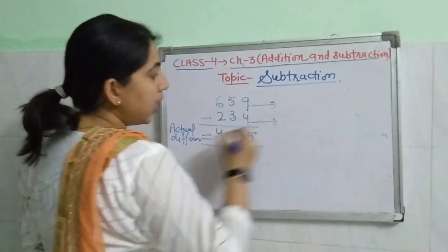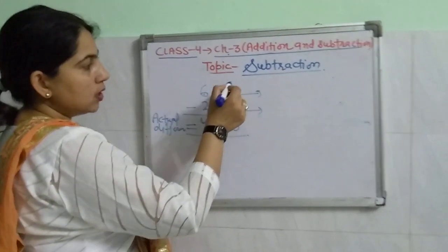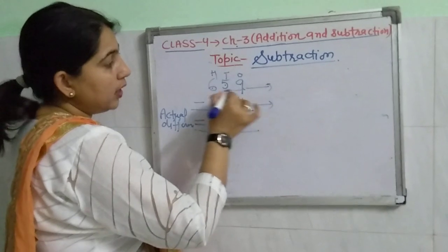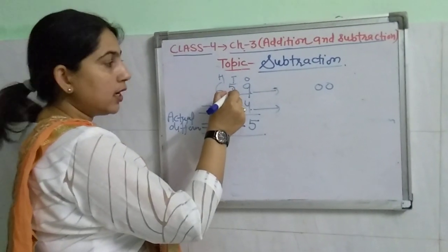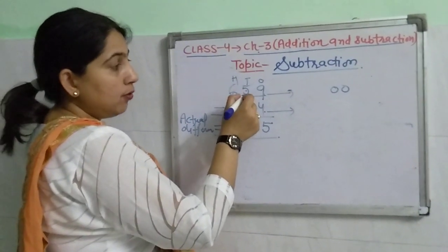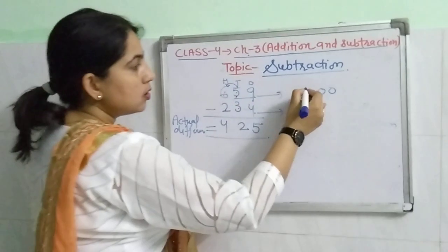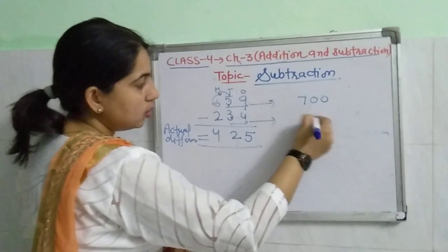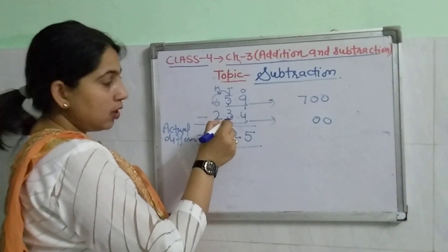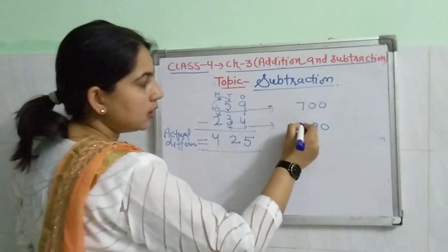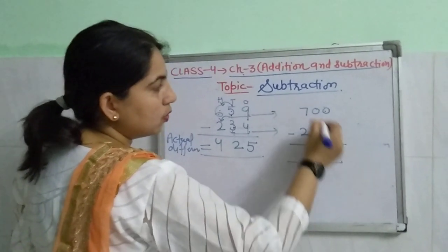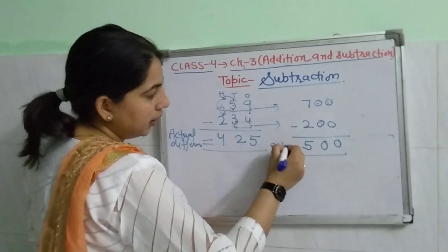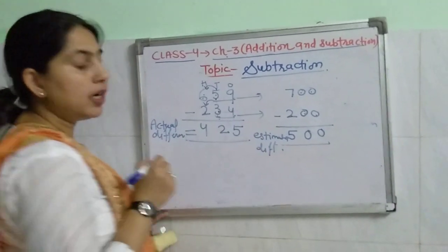If we have to find the estimated or rounded-off difference to the nearest 100: for 659, the tens digit is 5, so we add 1 to the next digit, giving 700. For 234, the tens digit is 3, which is less than 5, so we write it as 200. Now subtract: 0 minus 0 is 0, 0 minus 0 is 0, 7 minus 2 is 5. So the estimated difference is 500.